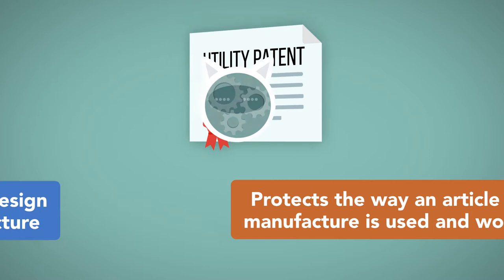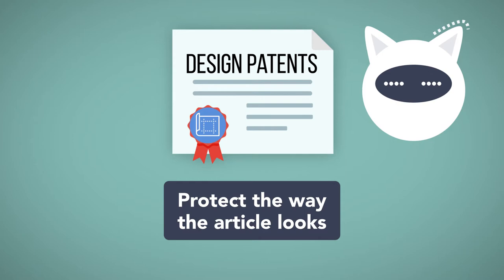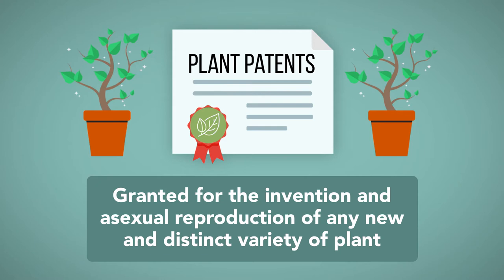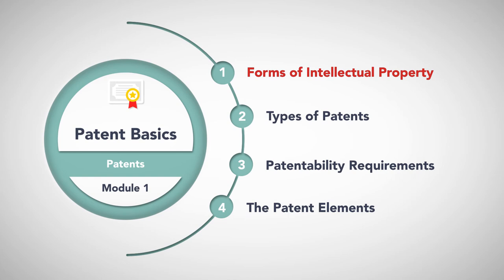Utility patents protect the way an article of manufacture is used and works. Design patents cover the ornamental design for an article of manufacture, and they protect the way the article looks. Plant patents are granted for the invention and asexual reproduction of any new and distinct variety of plant.